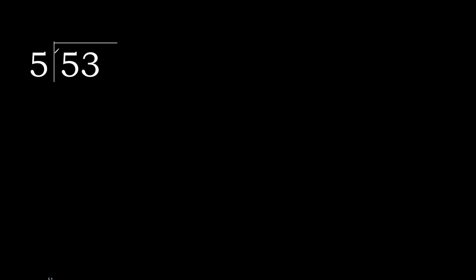53 divided by 5. 5 is not less, therefore we work with 5. 5 multiplied by which number is nearest to 5 but not greater? 5 multiplied by 2 is 10 — 10 is greater. Therefore 5 multiplied by 1 is 5. 5 is not greater. 5 minus 5 is 0.